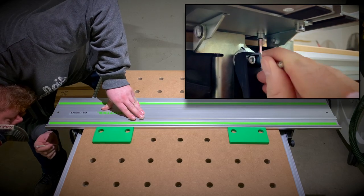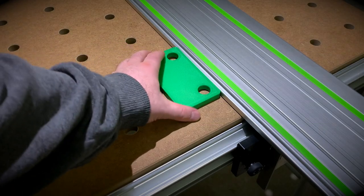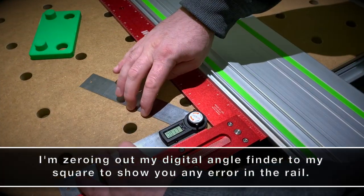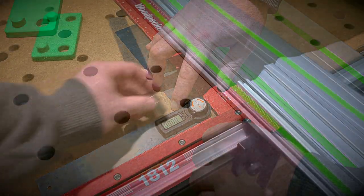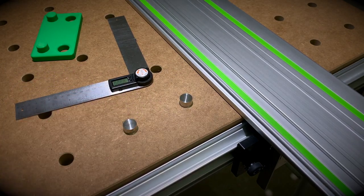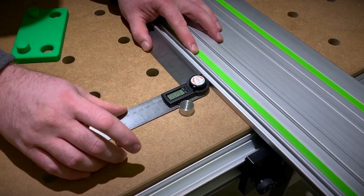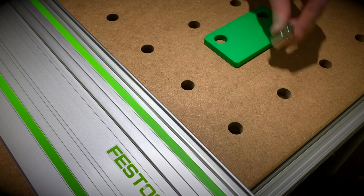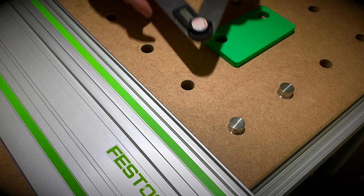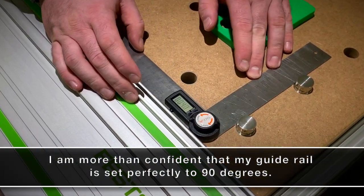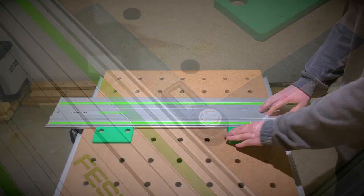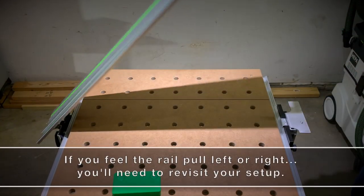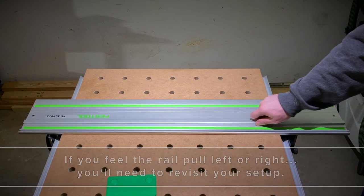Now your guide rail should be at 90 degrees, but just to be on the safe side, let's go ahead and check it for square. If your rail is set correctly, you shouldn't feel any pull left or right when you go to raise it up, which I don't, and it will register perfectly on the support bracket when you go to lower it into place, which it does as you can see here.